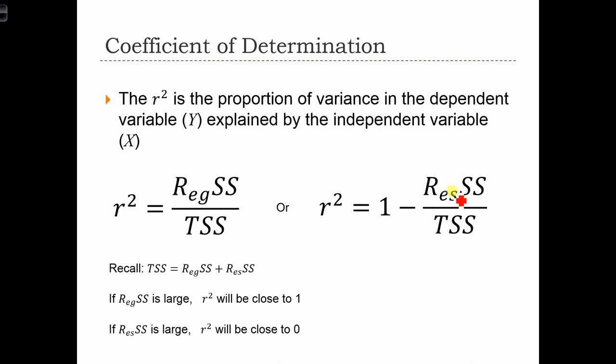In this case, when the regression sum of squares is large, then we see that the r-squared will be large. In this case, when the residual sum of squares is large, then the r-squared will be small. Because TSS equals RegSS plus ResSS, we know that this ratio can never be more than one and it can never be less than zero.